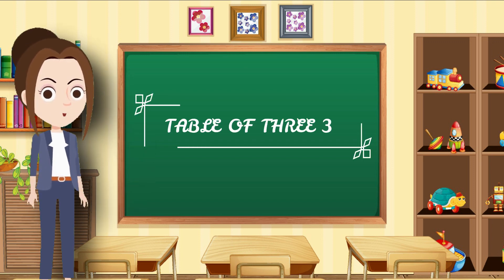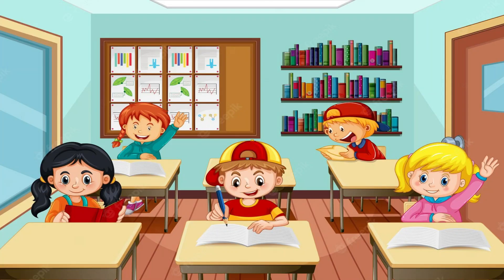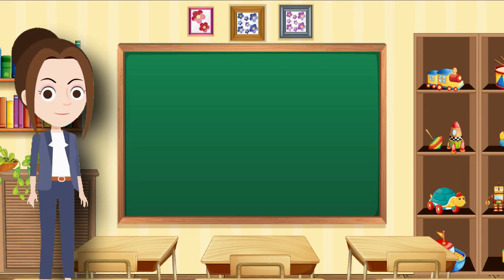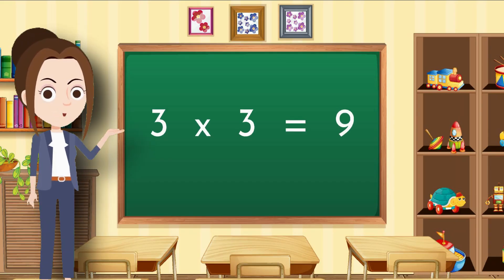Hello kids, it's time to learn the table of three. So start with me: three ones are three, three twos are six, three threes are nine.